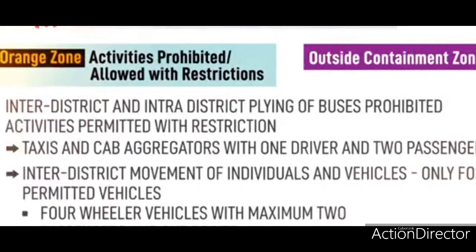In orange zones — again, outside of containment zones — inter-district and intra-district plying of buses is prohibited. Activities permitted with restrictions include taxis and cab aggregators with one driver and two passengers, and inter-district movement of individuals and vehicles only for permitted purposes.